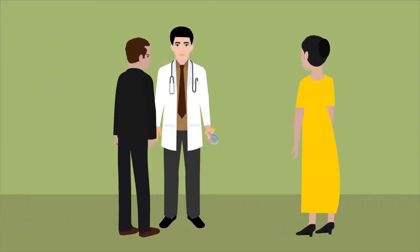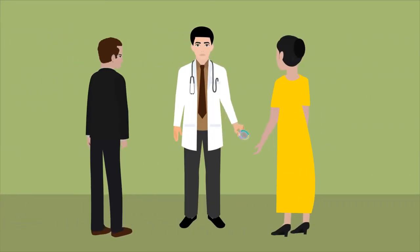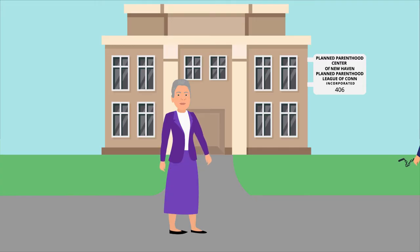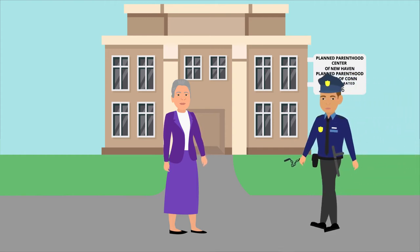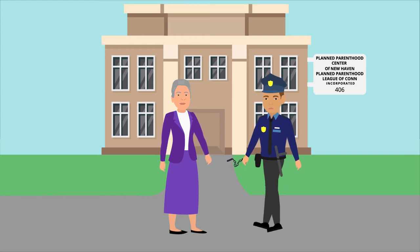Griswold knew she was acting in violation of Connecticut law and purposefully wanted to challenge the law's constitutionality since she felt it turned women and their doctors into criminals. While her clinic was only open for 10 days during 1961, she was arrested for aiding and abetting contraceptive use.